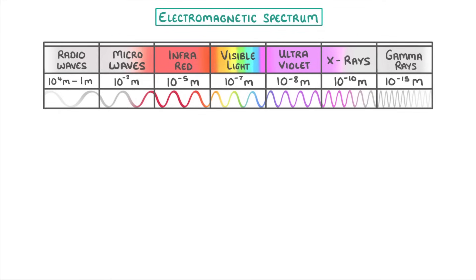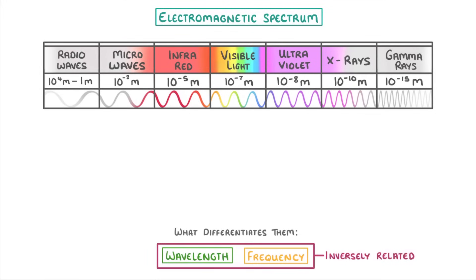As you can see in our table, we split electromagnetic waves into seven basic types, but they're actually all part of one continuous spectrum. What differentiates them is their wavelength and their frequency, which are inversely related, which means that if one goes up, the other one goes down.